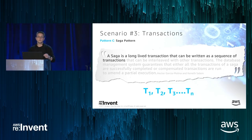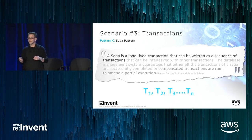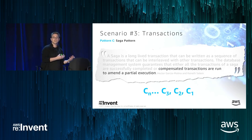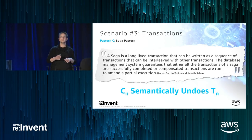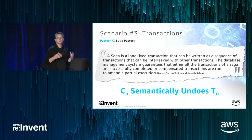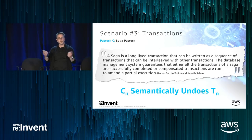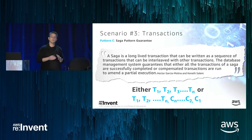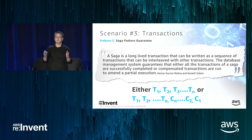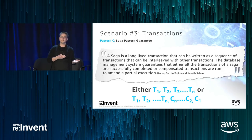A saga is a long-lived transaction written as a sequence of sub-transactions. You take transaction T and split it into a series of transactions. Then you create compensating transactions to undo each one in case you need to roll back. Importantly, compensating transactions don't necessarily undo the transaction literally — they semantically undo it. For example, that email you sent to your boss that you want to recall — you can't truly undo it, but you can send an apology. The saga's guarantee is: either all transactions complete leaving the system in a consistent state, or compensating transactions return the system to a business-consistent state.